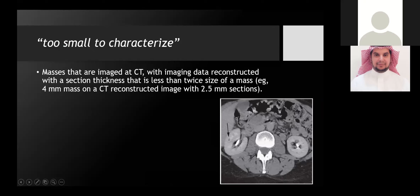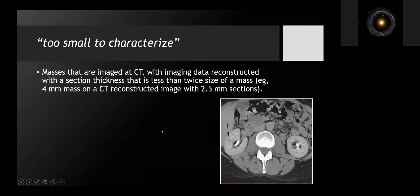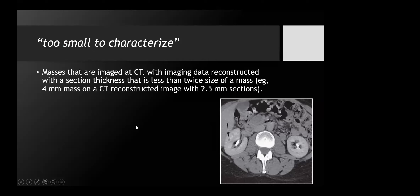The definition for 'too small to characterize': the lesion must measure less than twice the CT slice thickness. For example, if we reconstruct the CT abdomen at 2.5 millimeter thickness, we can use this term if the lesion is less than five millimeters, and we can classify it as Bosniak 2.